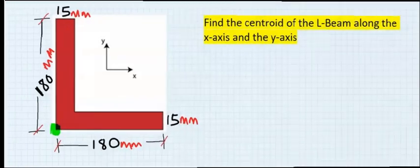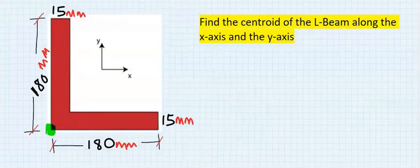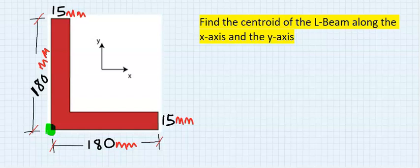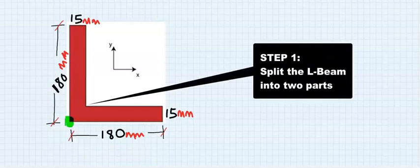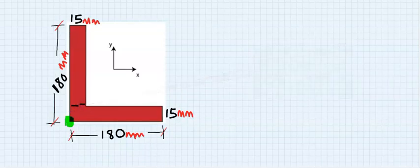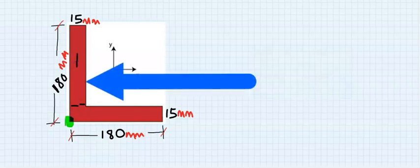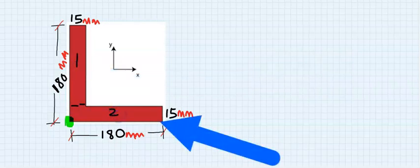In this example, we have to find the centroid of this L beam along the X axis and also along the Y axis. Step number 1: Split the L beam into 2. This is rectangle 1 and this is rectangle 2.